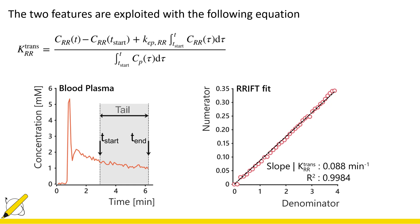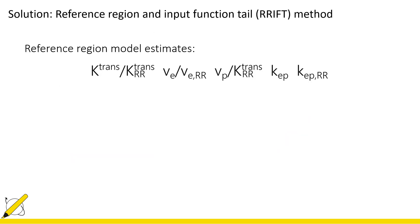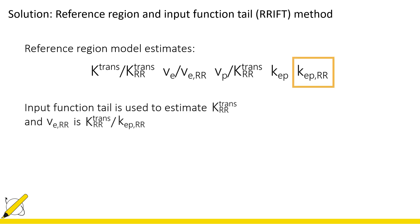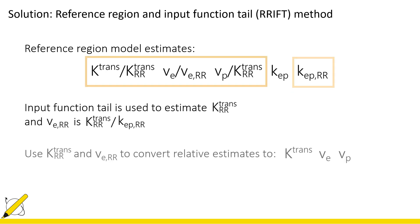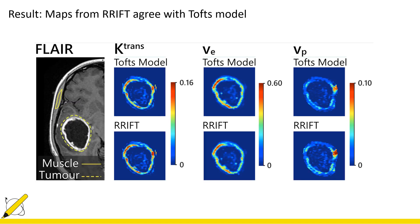To recap, our method uses the reference region model to first estimate the relative parameters along with K-ep for the reference region. We then use the equation along with the input function tail to estimate K-trans, and then we can get VE by taking K-trans and dividing it by K-ep. Once we know the parameters for the reference region, we can convert the relative parameters to absolute parameters. This method is called the reference region and input function tail method, abbreviated as RIFT.